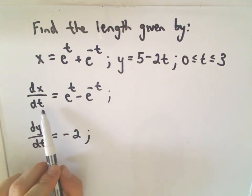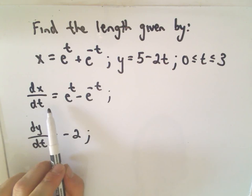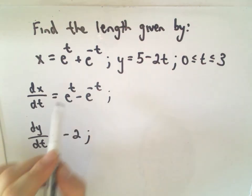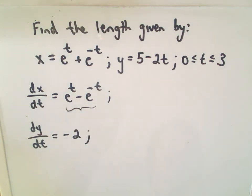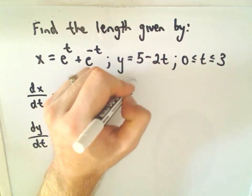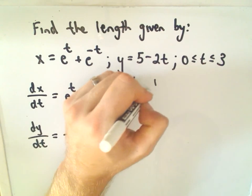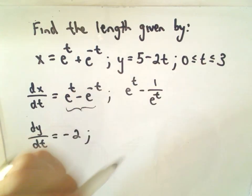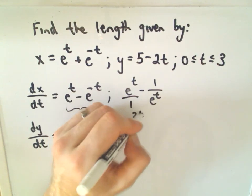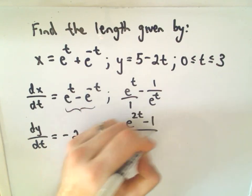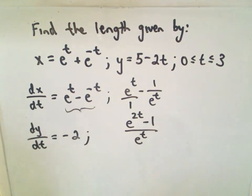So, I'm going to use the first derivative test. And remember to figure out where a function is increasing or decreasing. You just find the critical numbers of that function. So, I have to find the critical numbers of e to the t minus e to the negative t. And I can write that as e to the t minus 1 over e to the t. If I multiply top and bottom by e to the t, I'll get e to the 2t minus 1 over e to the t.